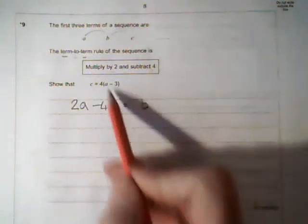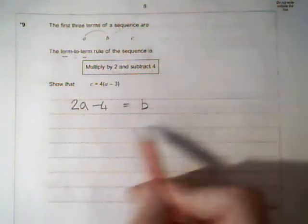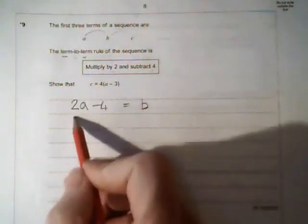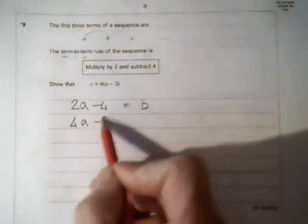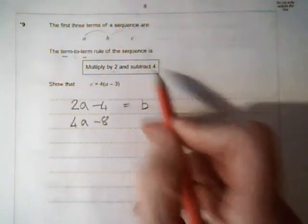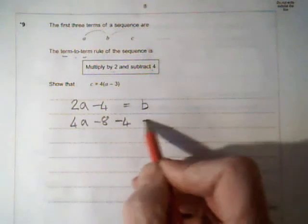To get from B to C we do that again. We multiply by 2 and subtract 4. So I'm going to multiply this by 2. So I'm going to get 4A minus 8. Then I subtract 4. And that makes my C.